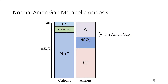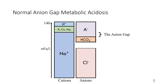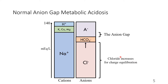In normal anion gap metabolic acidosis, bicarbonate is lost — for example, through the gastrointestinal tract or through renal losses. Chloride increases, and this maintains charge equilibration. Therefore, the anion gap remains unchanged.